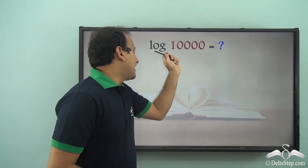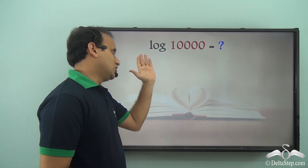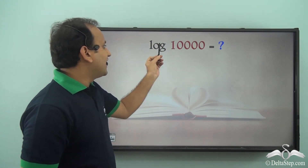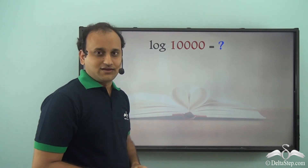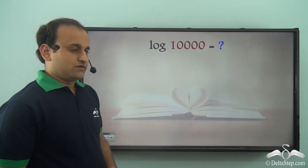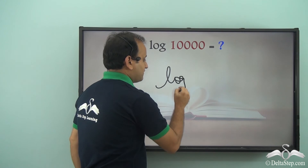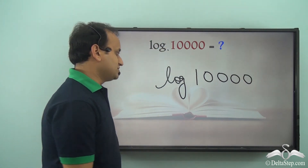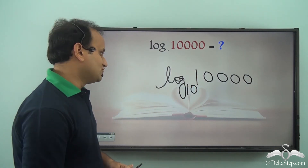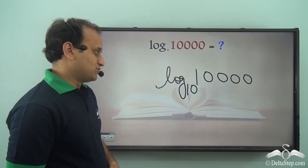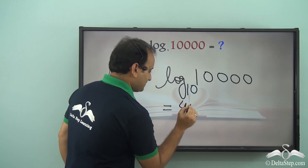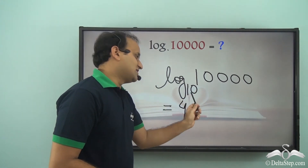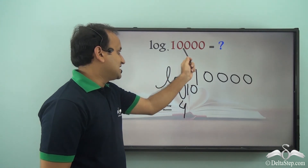Let's say you have to find log(10000) — it looks simple but there's a catch: no base is given. When no base is mentioned, this is called a common logarithm, and the base is always 10. So log(10000) = log₁₀(10000) = 4, because 10⁴ = 10000. The number of zeros gives the number of times 10 needs to be multiplied, so log(10000) = 4.